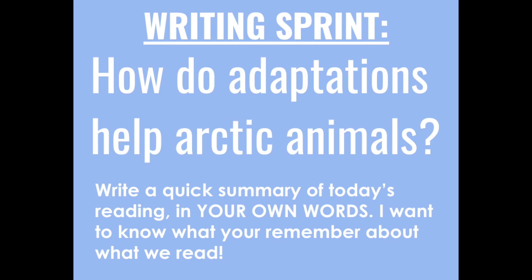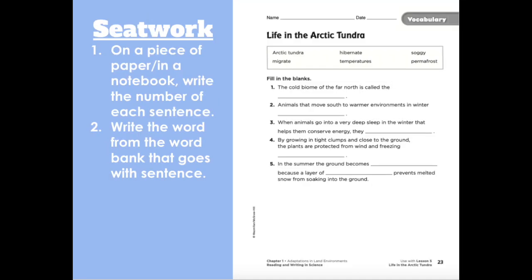Now onto our writing sprint. On a piece of paper or in your notebook, you're going to be doing the writing sprint to answer the question: how do adaptations help arctic animals? Write a quick summary of today's reading in your own words. Now onto our seat work — on a piece of paper or in your notebook, write the number of each sentence. Write the word from the word bank that goes with each sentence. Seat work was our final task for today. See you tomorrow.